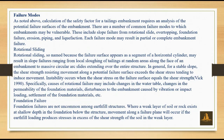Failure modes for a tailings embankment require analysis of potential failure surfaces. Common failure modes include slope failures from rotational sliding, overtopping, foundation failure, erosion, piping, and liquefaction. Each failure mode may result in partial or complete embankment failure. Rotational sliding — so named because the failure surface appears as a segment of a horizontal cylinder — may result in slope failures ranging from local sloughing of tailings to massive circular arc slides extending over the entire structure.